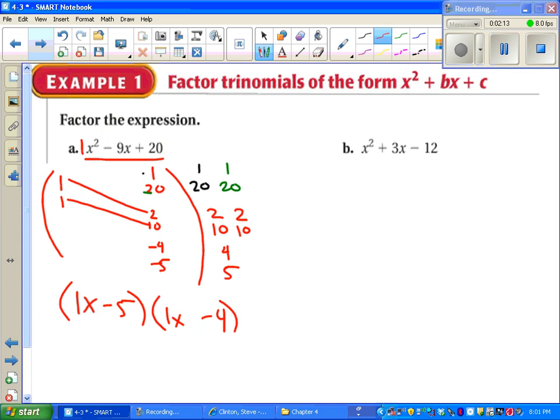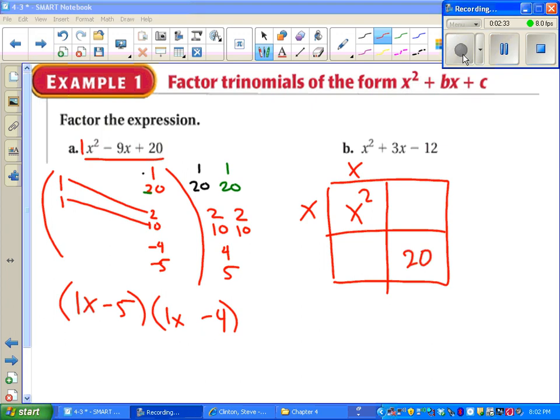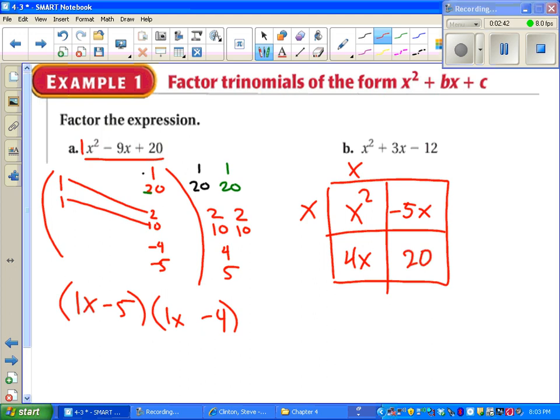Another way you might have learned it is maybe you drew a box. A 2 by 2 box. You put in your x squared, you put in your 20. Then you needed to say, okay, what do I multiply together to get x squared? x and x. What can I multiply together to get 20? Two things that multiply to give 20 are 5 and 4. We need them also to add to 9. Then say x times what is negative 5x? Negative 5. x times what is negative 4x? Negative 4. And then we get our factors.